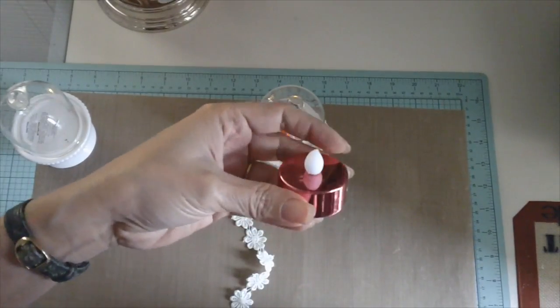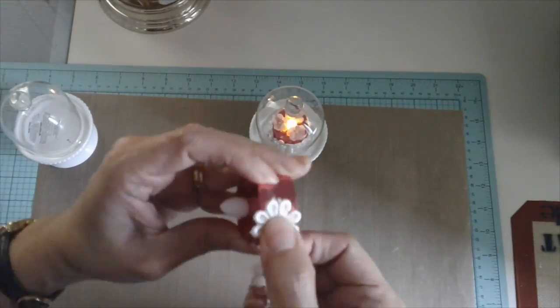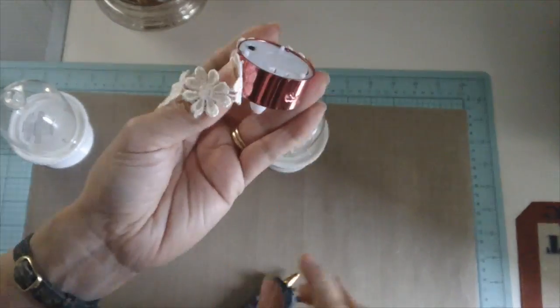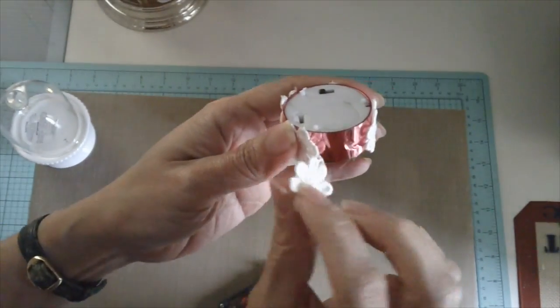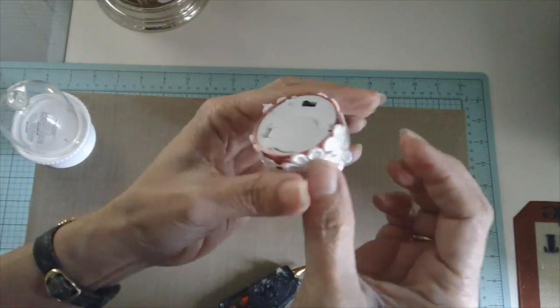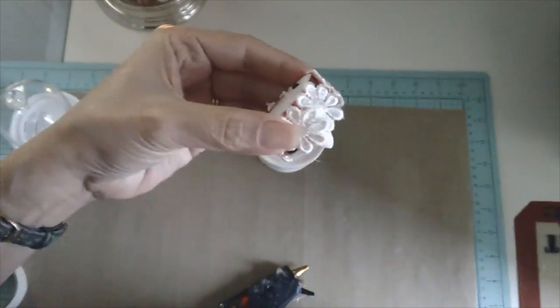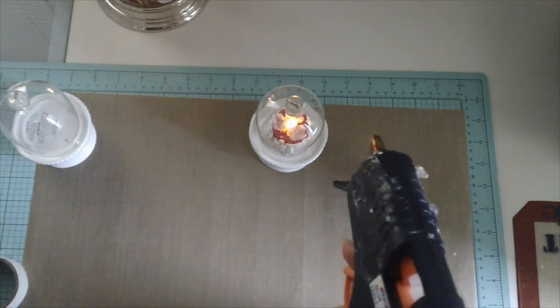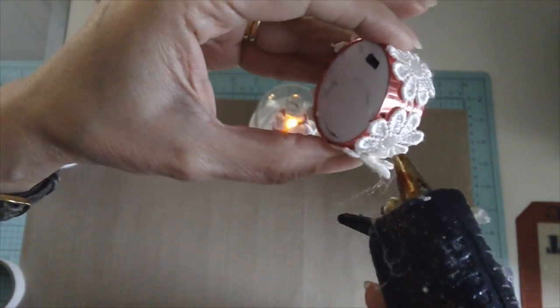I have my glue gun going over here and I'm just going to put some glue. And like so. And then if you don't want this to overlap you can just cut that piece, but I don't really mind. So I'm just going to put enough glue there, just a little bit to just close it.